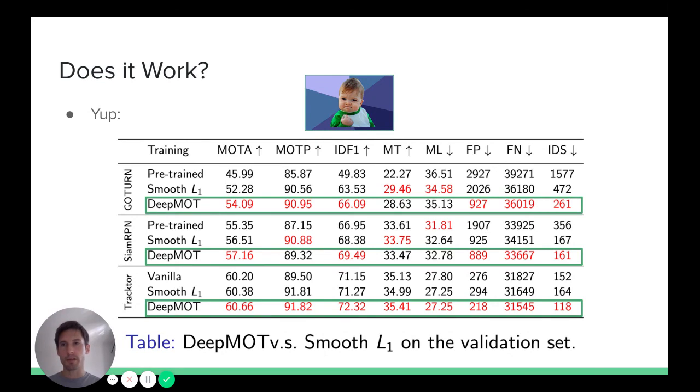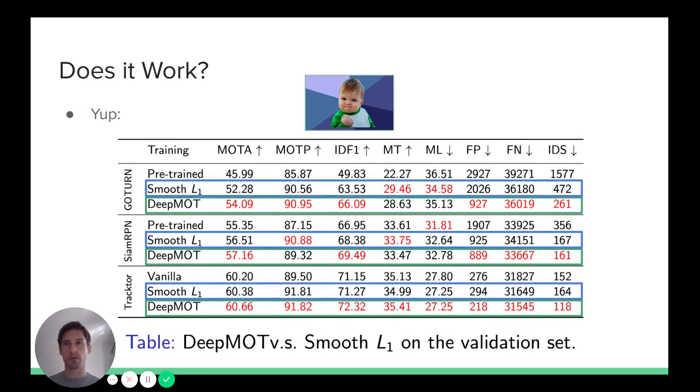We could also show that this approach is better compared to baseline loss that does not establish matching between these two sets explicitly, and thus cannot penalize number of ID switches. As you can see here, this approach yields higher number of ID switches compared to variant trained using our loss, and thus yields lower MOTA.